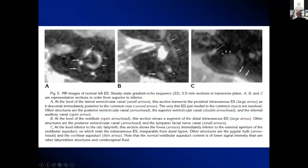These CISS sequences from T2-weighted imaging show that you can actually see the components of the endolymphatic sac, the semicircular canals, and the endolymphatic sac itself.